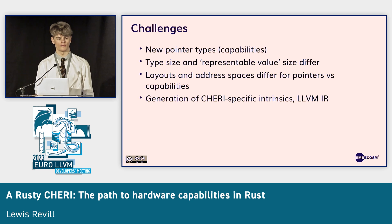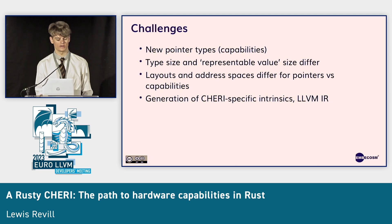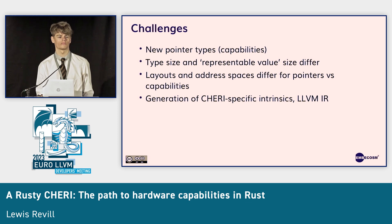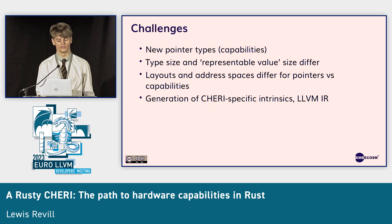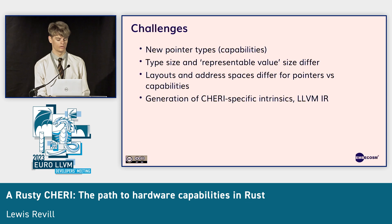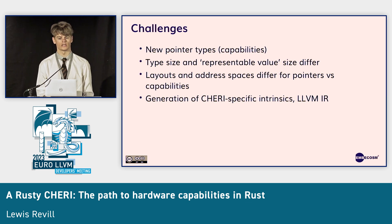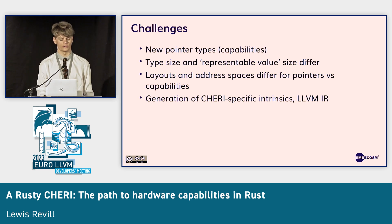Given that we want these benefits, what challenges stand in our way in terms of the compiler? The biggest challenge by far is the addition of these new pointer types in the form of capabilities. Because we have additional metadata, we end up in a situation where the type size and the size of the representable value for capabilities are different, which breaks a huge amount of assumptions in the compiler. We also want to represent capabilities as pointers in different address spaces from normal pointers and with different type layouts, and we need to cover generation of CHERI-specific intrinsics and generating the correct LLVM IR for a CHERI system.